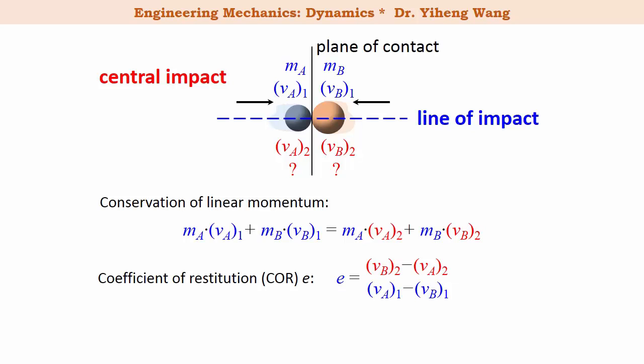The coefficient of restitution equals to the difference in the final velocities, Vb2 minus Va2, over the difference in the initial velocities, Va1 minus Vb1. Notice here, you must switch the order of the two particles on the numerator and the denominator.